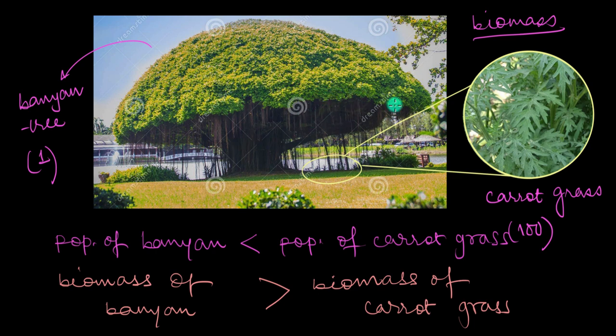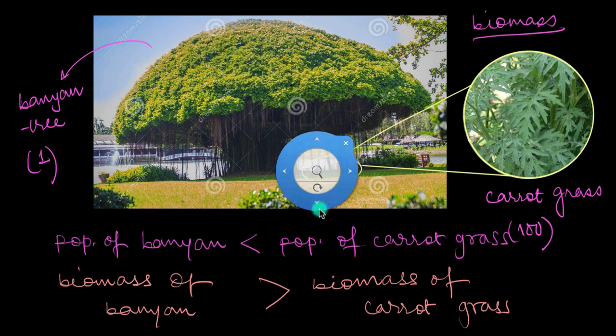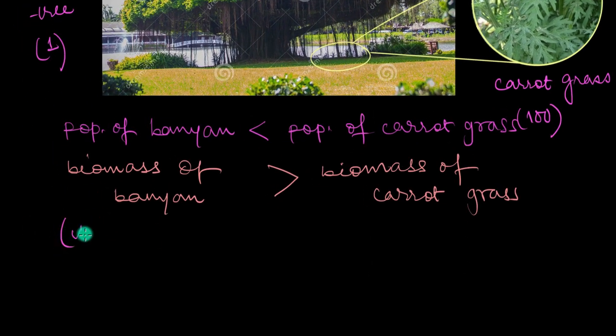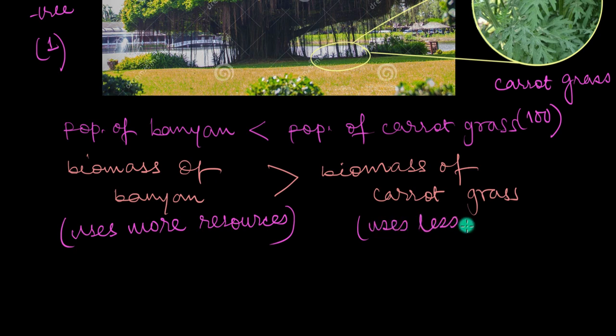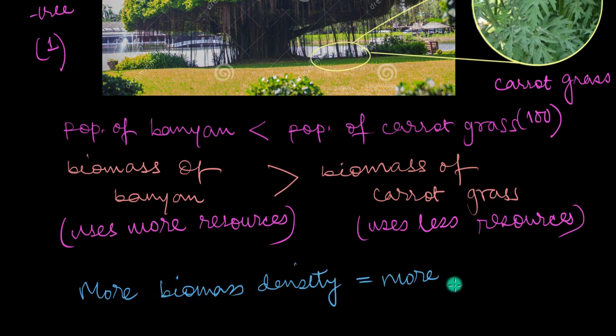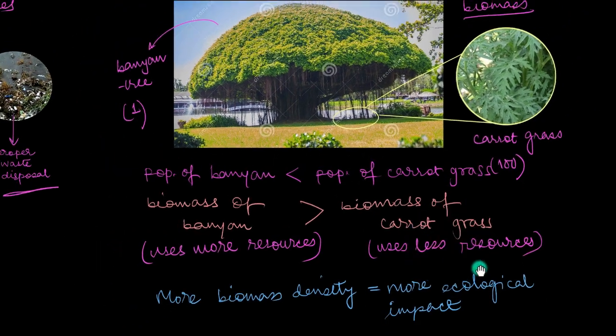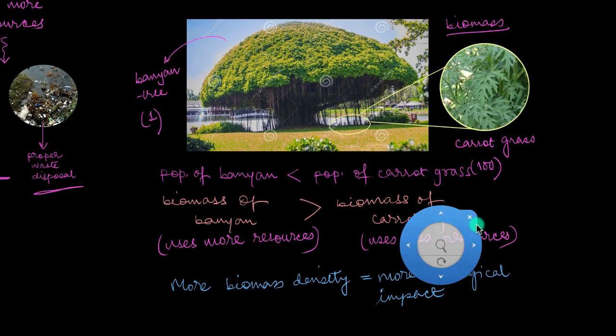So essentially, these plants are controlling these resources. So one huge banyan tree will use more resources as compared to the smaller carrot grass plants, which are going to use much less resources. And as a result of this, the impact that this banyan tree will have on the ecosystem will be a whole lot more than the impact of these smaller plants. So that means more biomass density equals more ecological impact. And that's why biomass makes a whole lot more sense in this scenario as compared to the population numbers of these plants.